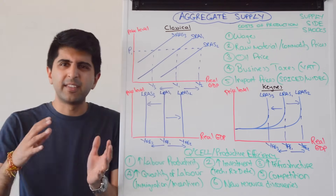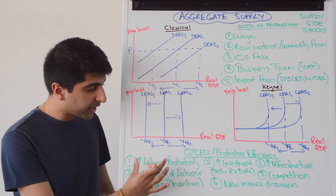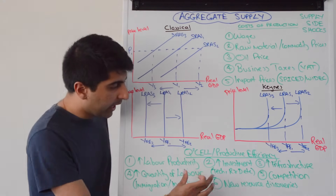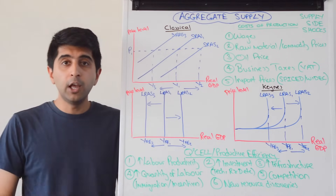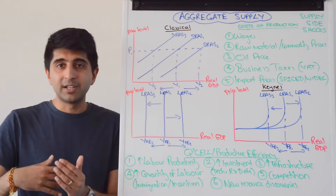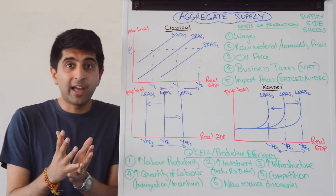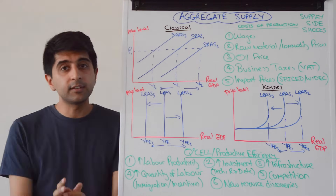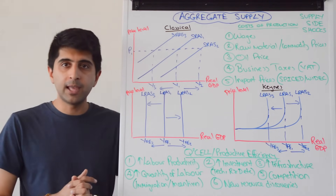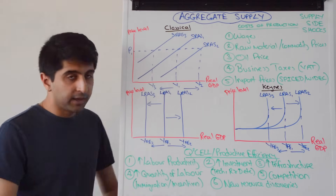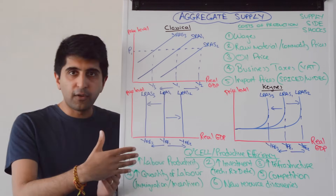New resource discovery comes under the land category — finding new resources increases the quantity of land, thus shifting LRAS to the right. LRAS can also shift to the left: a big decrease in labour productivity, mass capital depreciation, war, conflict, or a natural disaster which destroys infrastructure and reduces the quantity of capital. It could be death which reduces the quantity of labour, a pandemic or health crisis severely affecting labour productivity. Hysteresis — caused by long-term unemployment where workers become discouraged and drop out of the labour force — reduces the quantity of labour. Emigration of working-age workers also reduces the quantity of labour, shifting LRAS left.